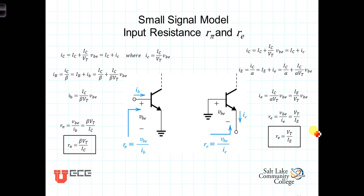In this video, we're going to continue with the derivation of the parameters associated with the small signal model for the bipolar junction transistors, the BJTs.